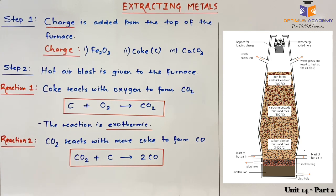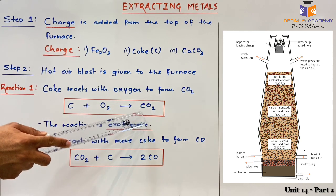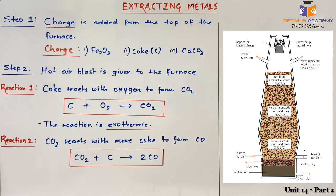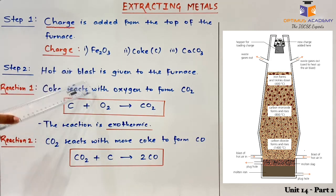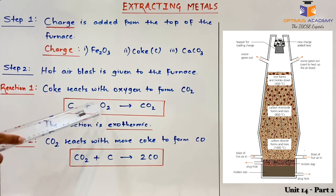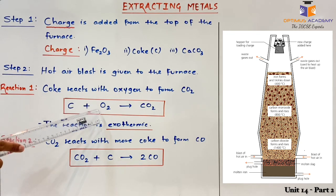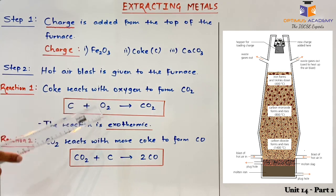The first question here is that we have already discussed that carbon dioxide is not a reducing agent — it is not going to reduce iron oxide. Then why let this reaction take place? The reason is that when carbon reacts with oxygen to form carbon dioxide, it is an exothermic reaction and it produces a lot of heat, which is favorable for the blast furnace.